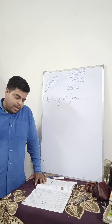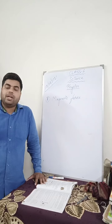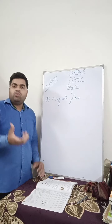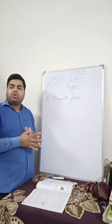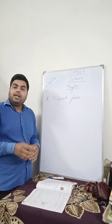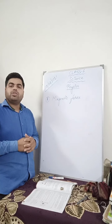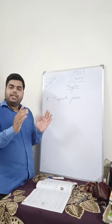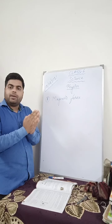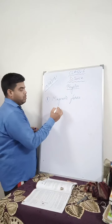Like electrostatic force, magnetic force is either attractive or repulsive. With electrostatic force, positively charged protons repel each other, and negatively charged particles also repel each other. But if one is positively charged and the other is negatively charged, they attract each other. In the same way, a magnet also has two poles.